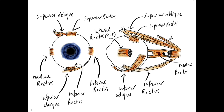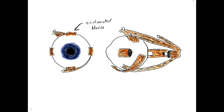On top of all this, we mustn't forget one final muscle — it's not involved in moving the eye but in moving the eyelid. This is called levator palpebrae superioris, and it is superior to the superior rectus muscle. It works to elevate the eyelid.